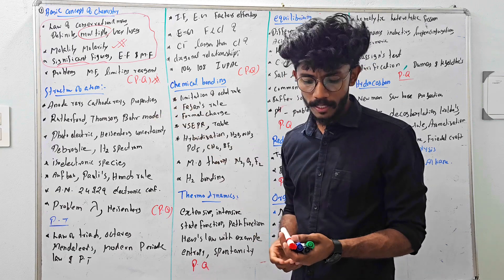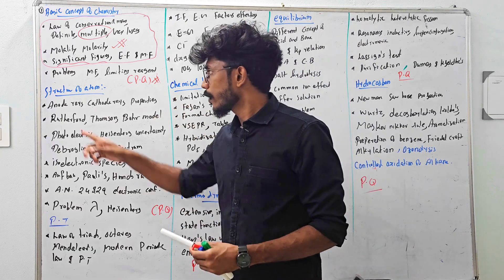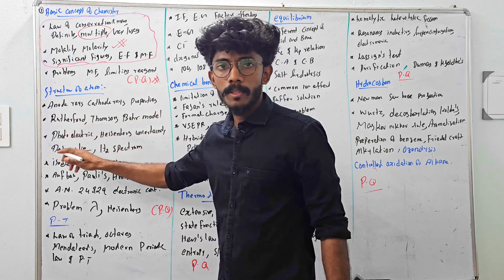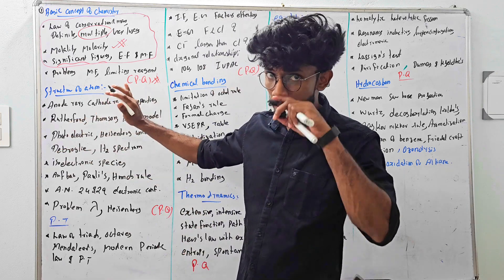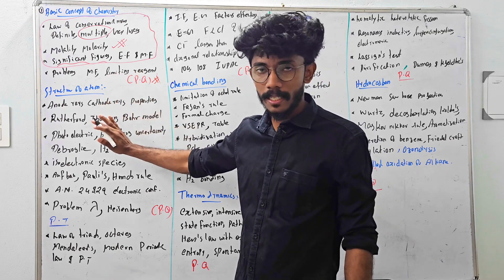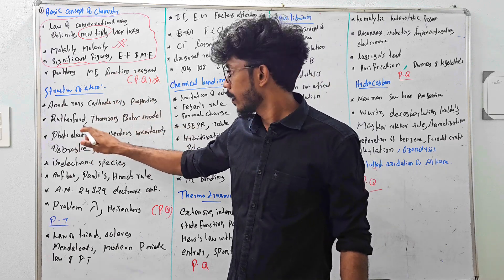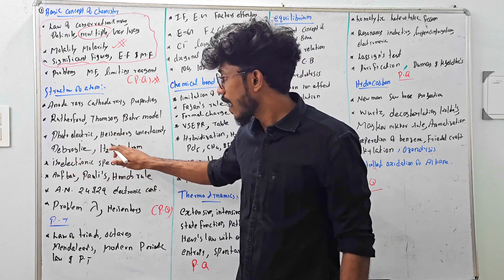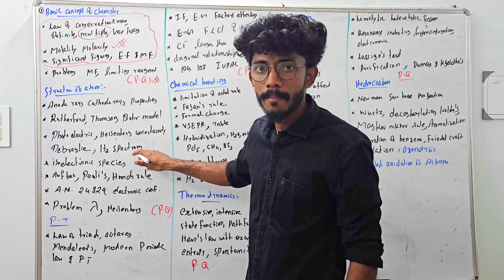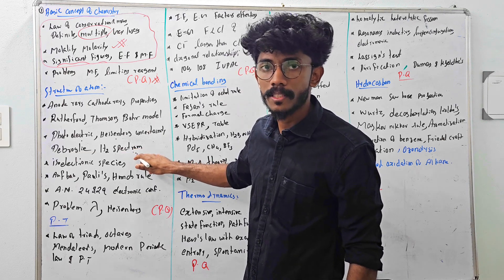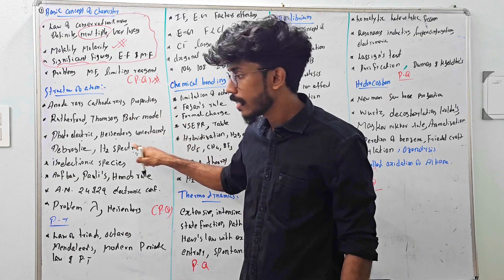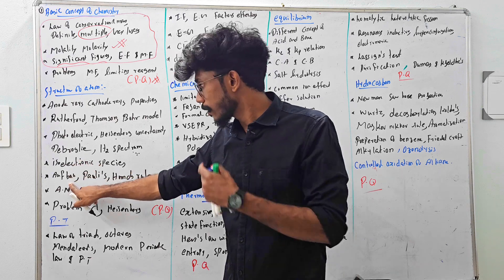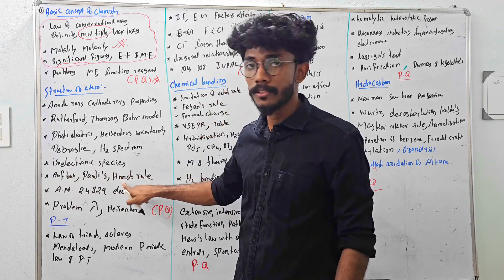The next chapter is the structure of atom. The structure of atom covers the properties of Rutherford, Thomson, and Bohr model — their merits and demerits — the photoelectric effect, Heisenberg uncertainty principle, de Broglie relation, hydrogen spectrum with Lyman series, Balmer series, Paschen series, isoelectronic species, Aufbau principle, Pauli exclusion principle, and Hund's rule.